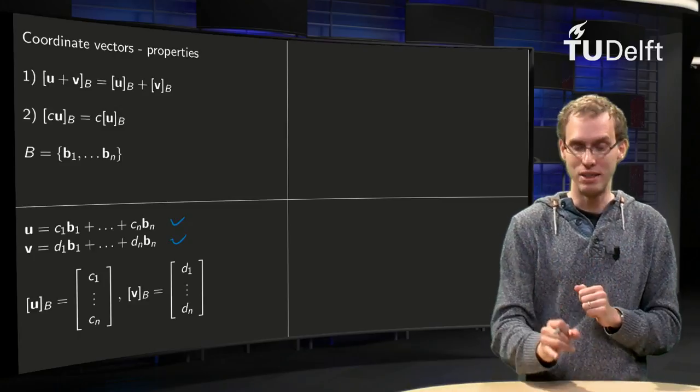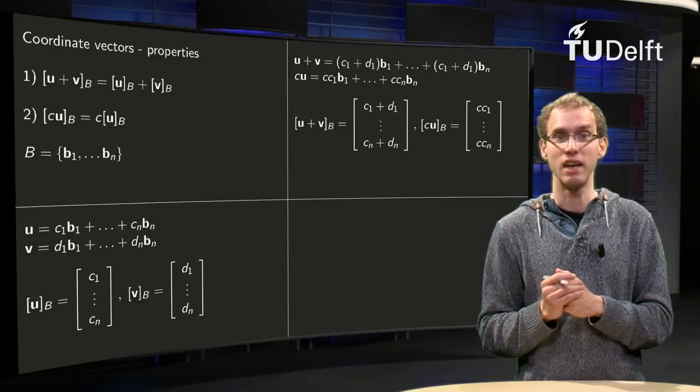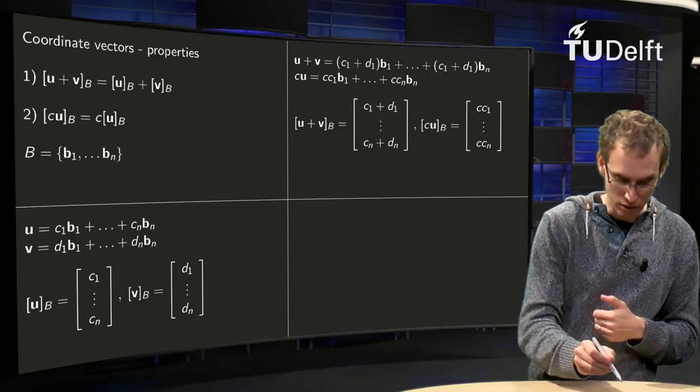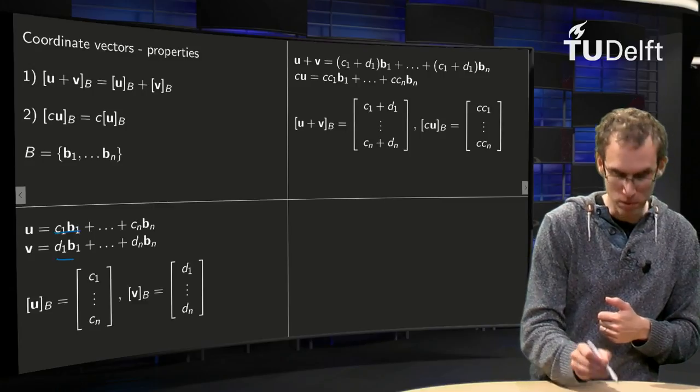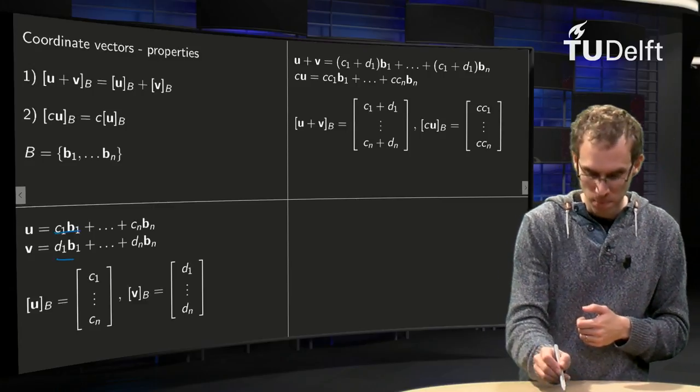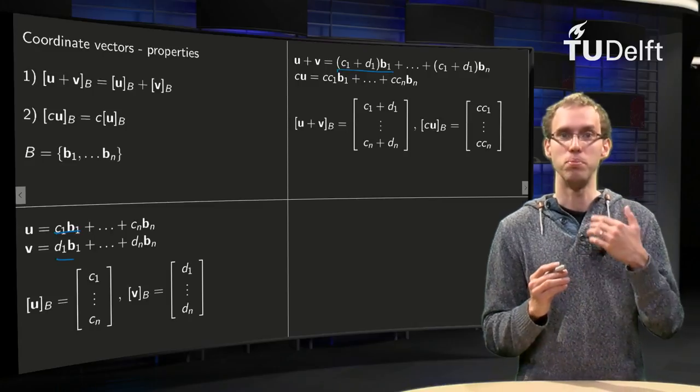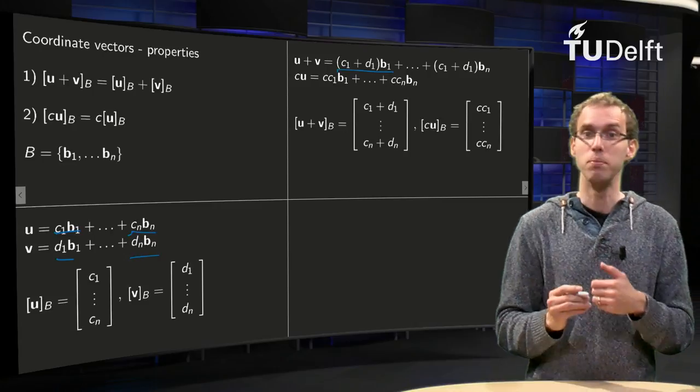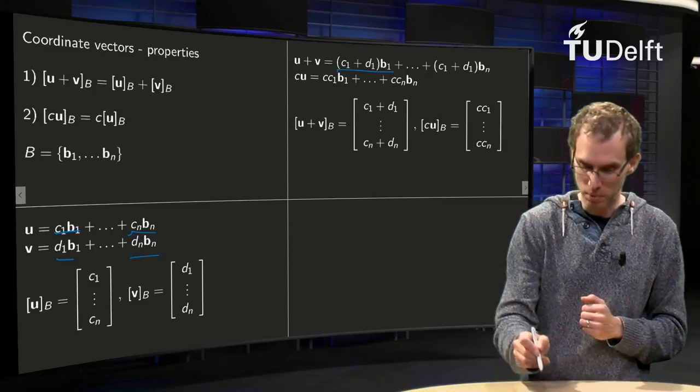So what happens now if we add u and v, and if we multiply them with a scalar? If we add up u and v, we get as our first term c1 b1 plus d1 b1 equals c1 plus d1 times b1, and so on and so on, and our last term cn bn plus dn bn will be cn plus dn times bn.